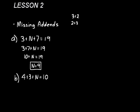Look at practice problem B. Four plus three plus what equals ten. We think to ourselves what instead of the letter N there. This time the four and the three are together, so we can just go ahead and add those two together. Four plus three is seven, plus what equals ten. Well, seven plus three would equal ten, so N equals three.